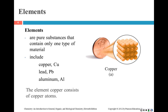Elements are pure substances containing only one type of material. Copper, for example, is an element, as well as lead, aluminum, hydrogen, and oxygen — those things you find on the periodic table of elements are all elements. If you have an element of copper, like a coin, then the copper consists of copper atoms.